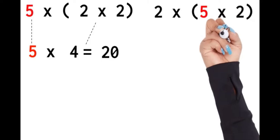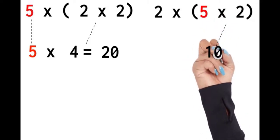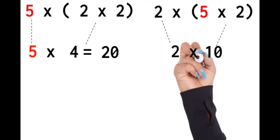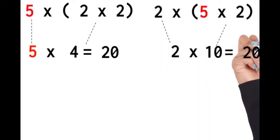Let's say I group it a different way. This time, I'm going to multiply what's in the parentheses first, which is five times two, which is 10. And then I'm going to multiply that answer 10 by two. Two times 10 is 20.